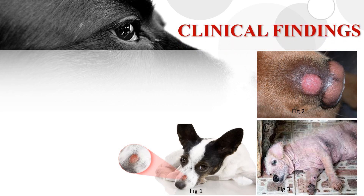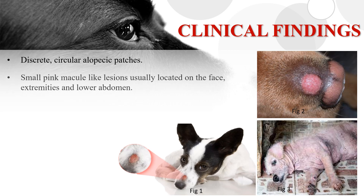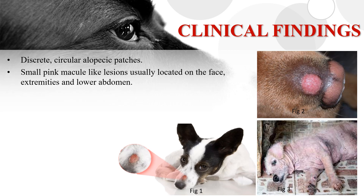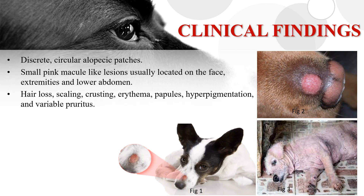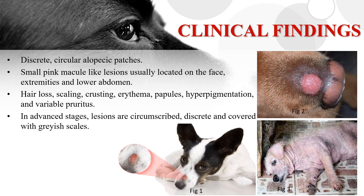Clinical findings of dermatophytosis include discrete circular alopecic patches, as seen in Figure 1 and Figure 2. Small pin macule-like lesions are usually located on the face, extremities, and lower abdomen. Hair loss, scaling, crusting, erythema, papules, hyperpigmentation, and variable pruritus may also be seen.